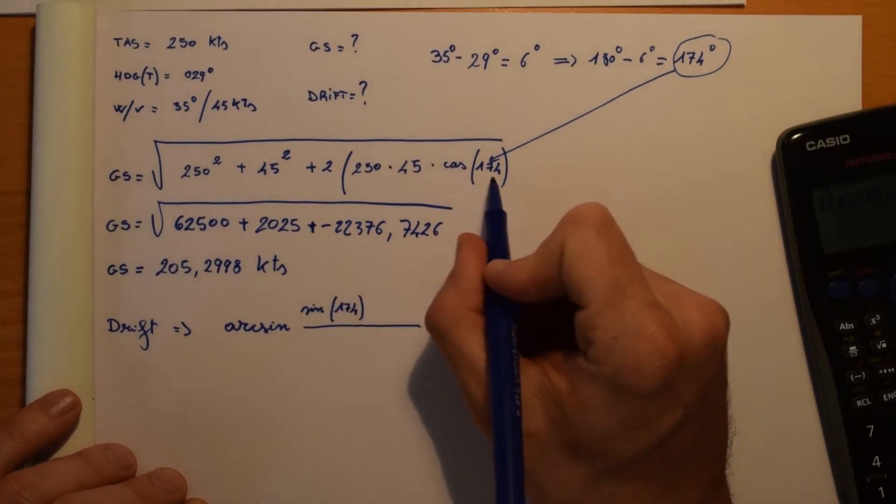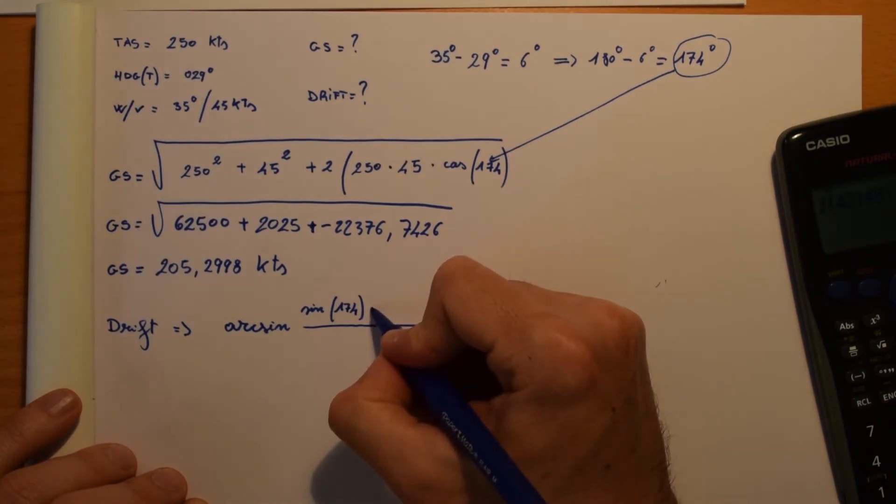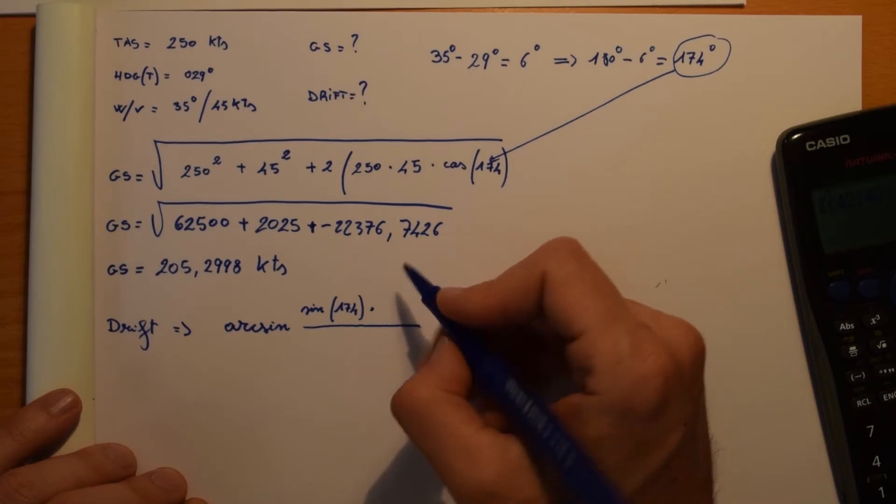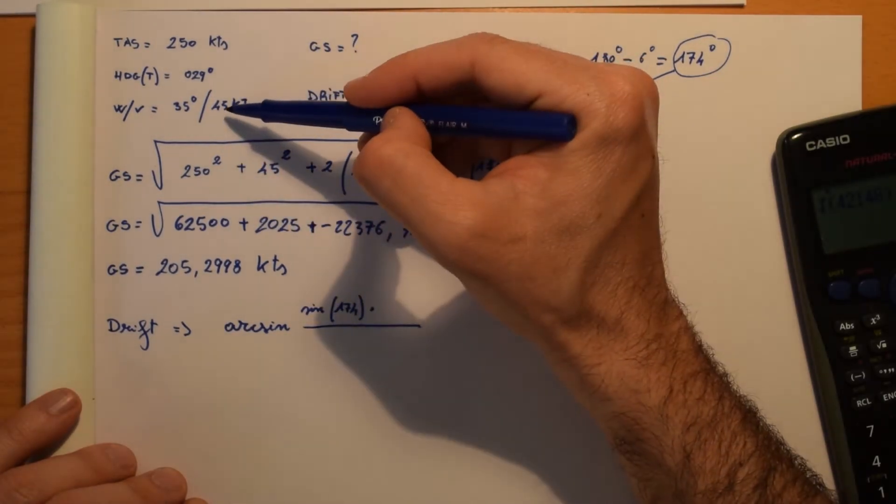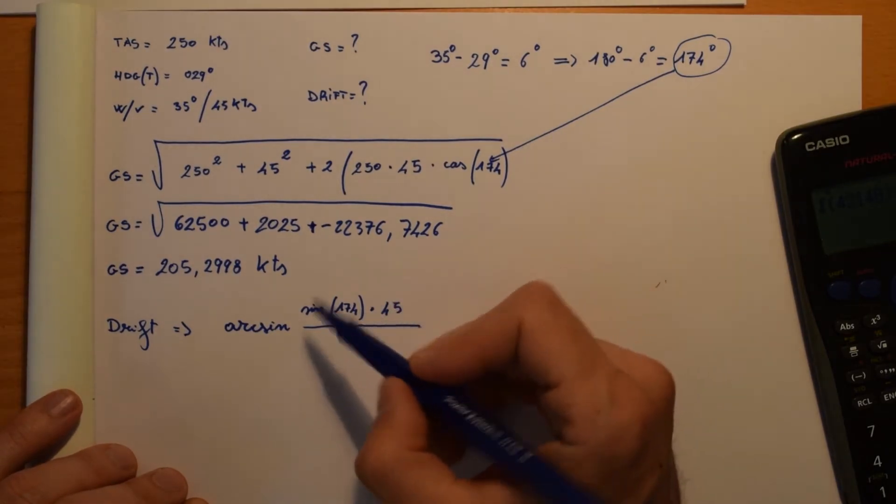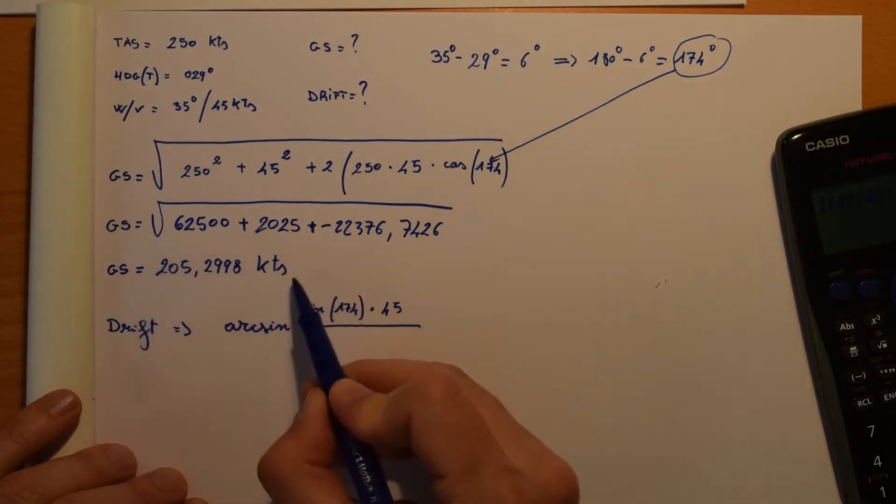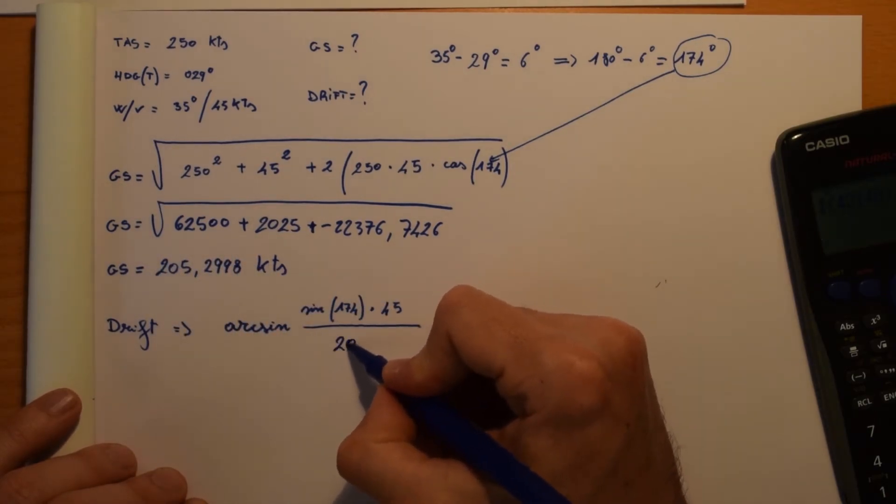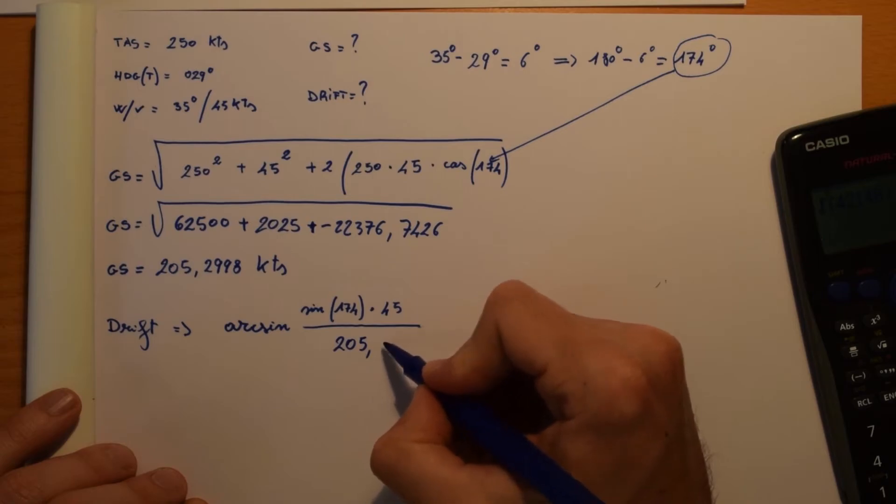During ground speed we were taking the cosine. Then the multiplication of the strength of our wind vector, that is 45, and at the bottom we take the ground speed we got just a few seconds before, that is 205.2998.